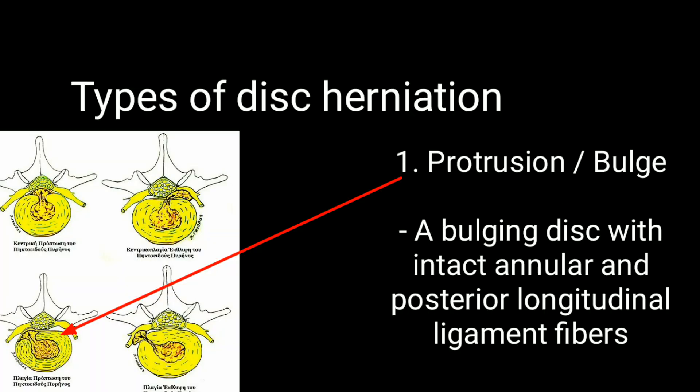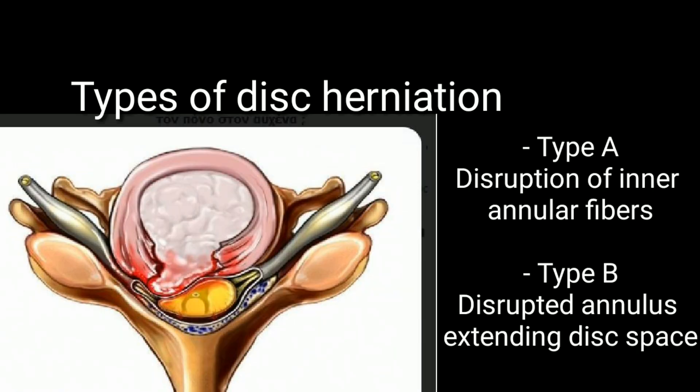Types of disc herniation include protrusion and bulge — a bulging disc with intact annular and posterior longitudinal ligament fibers. Type A involves disruption of the inner annular fibers. Type B involves a disrupted annulus extending into the disc space.